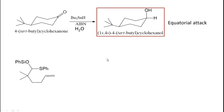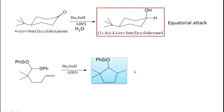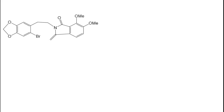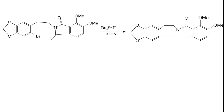Let us take another reactant. This on treatment with Bu3SnH gives a 5-membered ring product — this will be the product. Let us take another reactant, a bigger molecule. On treatment with Bu3SnH, this forms a ring product — a 7-membered ring is formed. This will be the product.